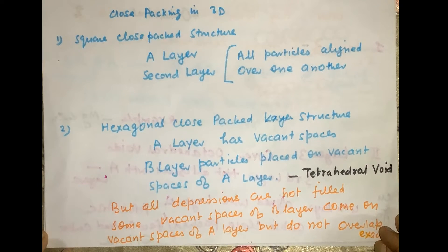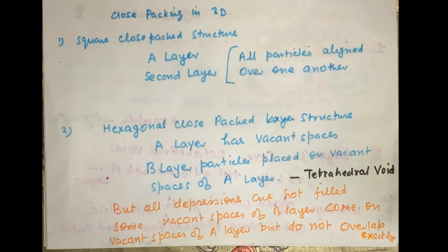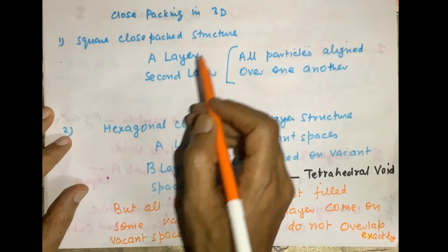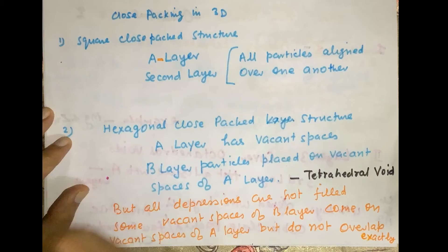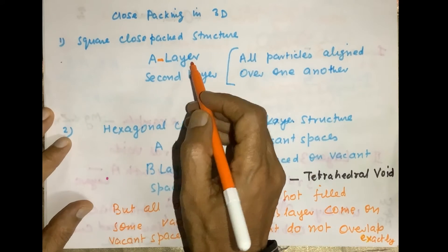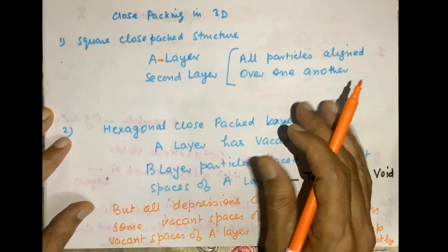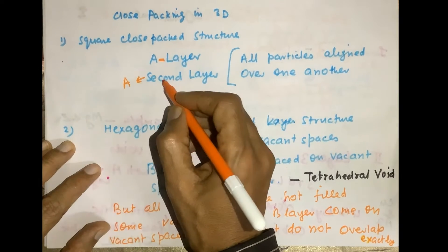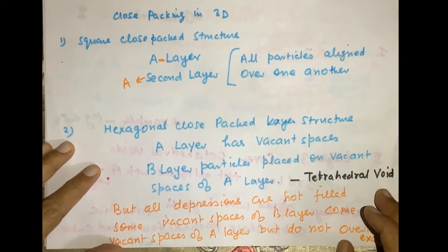Now we will explain close packing in three dimensions. We place another layer over the two-dimensional close packing of the particles. There are two methods for placing the second layer. We have a close packed structure of two dimensions, layer A, where the particles are closely packed. The second layer is placed in the same manner as layer A, so it may also be called layer A because all the particles are of the same alignment.